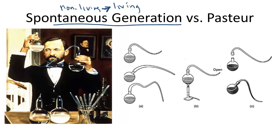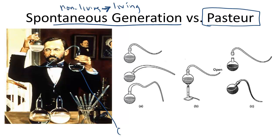Though this theory — Spontaneous Generation — states that, providing the right conditions, life can just create itself, almost two years later another scientist came along and said Francisco Redi was on the right path, and he just needed to go a little bit further to prove this, and to prove that microbes do not just arise out of thin air, that they do in fact arise from other microbes. So he set up a very famous experiment involving curved flasks.